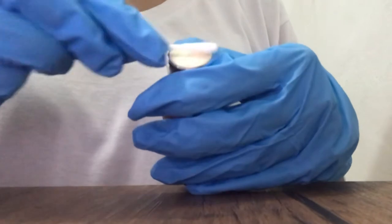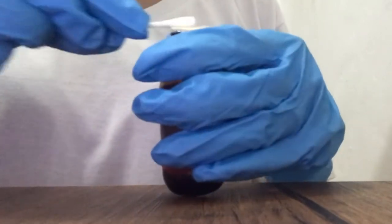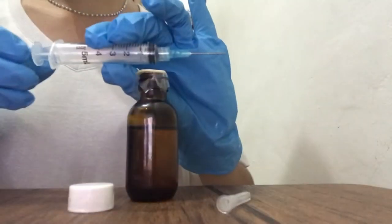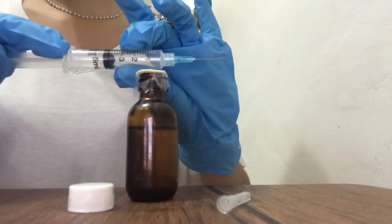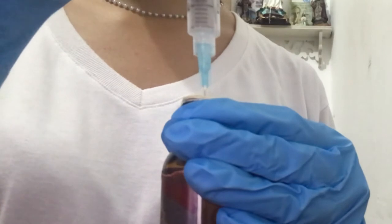Swab the top of the first vial with an alcoholized cotton ball. Draw air into the syringe equal to the amount of medication to be drawn up from the second vial. Inject air into the first vial.